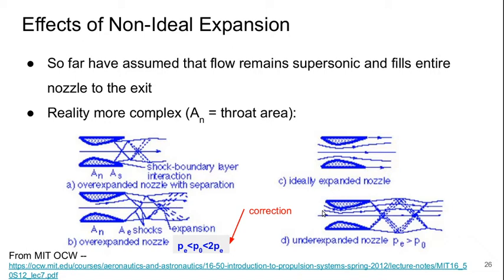In the case of an underexpanded nozzle, the flow becomes non-isentropic outside of the nozzle. And in the case of the overexpanded nozzle, we get something similar. In case A, the flow may separate and there will be a series of shocks, a shock boundary layer interaction, and the flow will become subsonic.